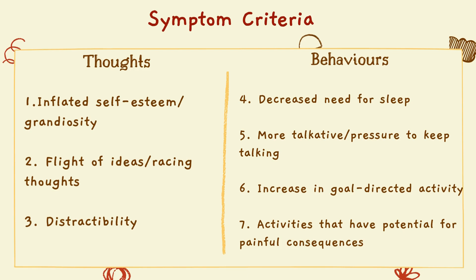In terms of behaviors, there is a decreased need for sleep — they can keep going and partying with very little or no sleep. They talk more and feel pressured to keep talking constantly. There are goal-directed activities, such as suddenly wanting to get a law degree, start a business, and run a marathon all in the same week. Their activities also have high potential for painful consequences, like maxing out a credit card, buying a car they can't afford, or infidelity in their relationship.